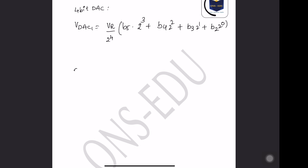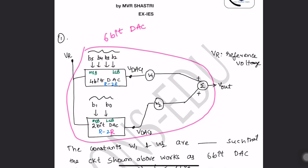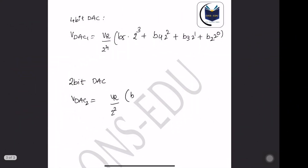Similarly, when we take the 2-bit DAC circuit, VDAC2 is equal to VR divided by 2 squared, multiplied by: V1 times 2 to the power 1, plus V0 times 2 to the power 0.